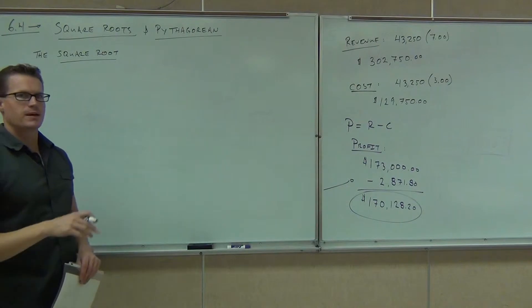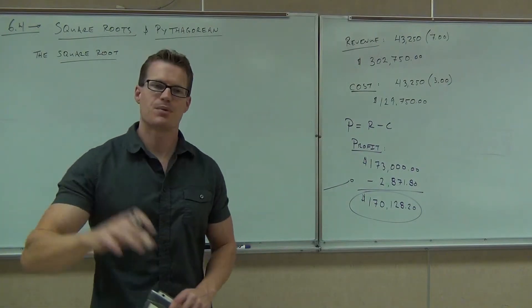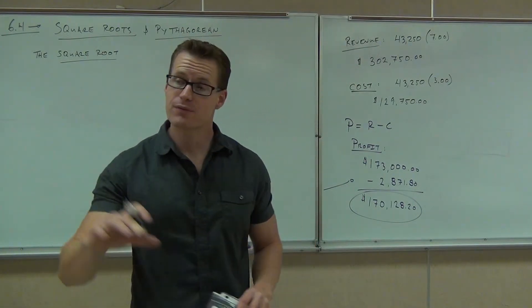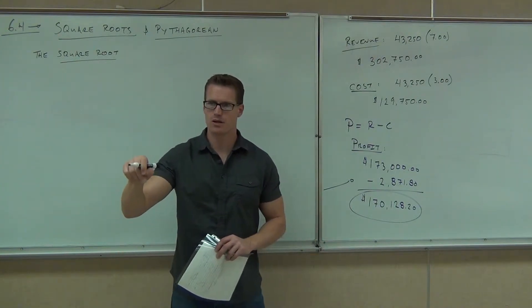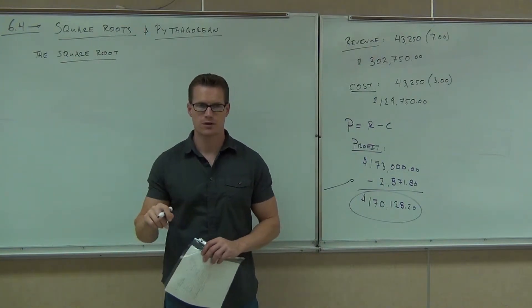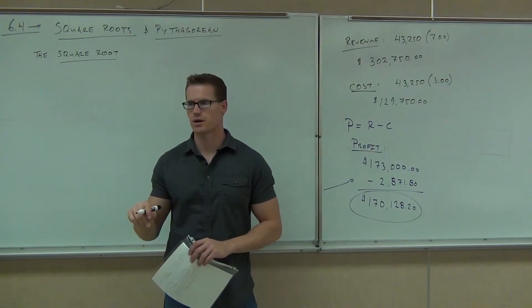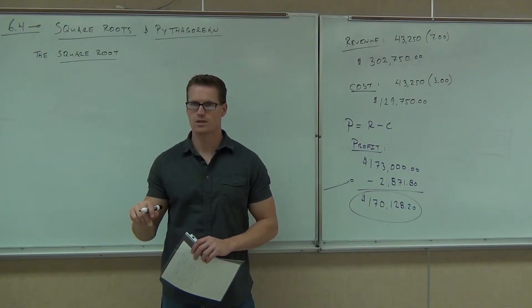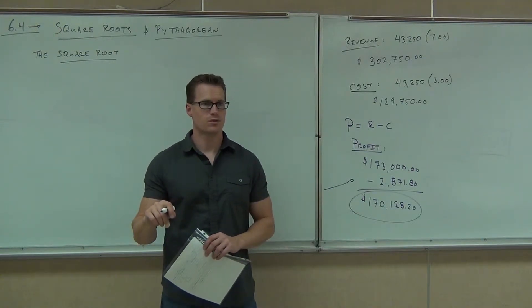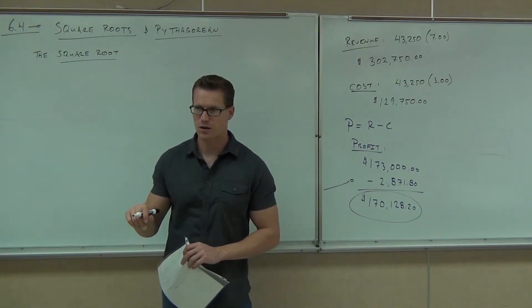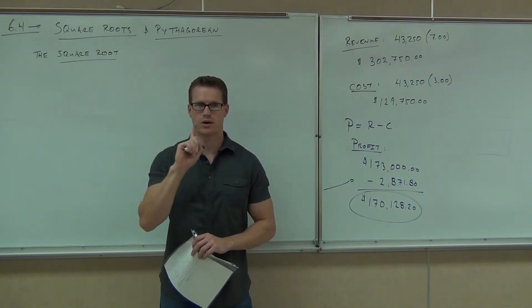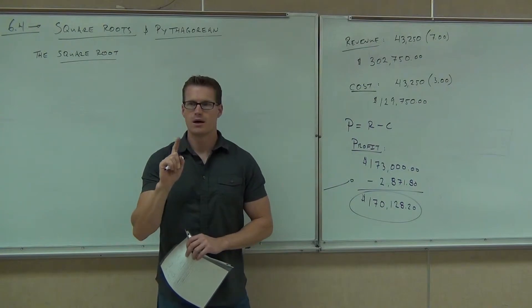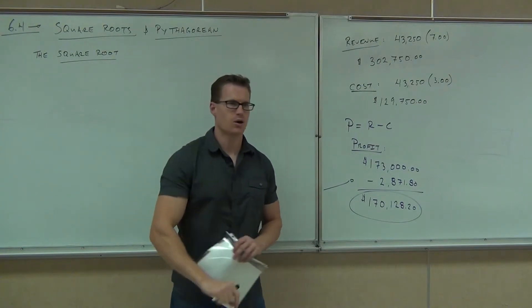The square root is the inverse or the opposite of squaring a number. Now we've squared numbers in here. For instance, let's practice this. Can you tell me, everybody, what is 3 squared? 9. What is 4 squared? 16. What is 7 squared? 49. Good. What's 11 squared? 121. What's 2 squared? 4. Good. What's 1 squared? 1. Good.